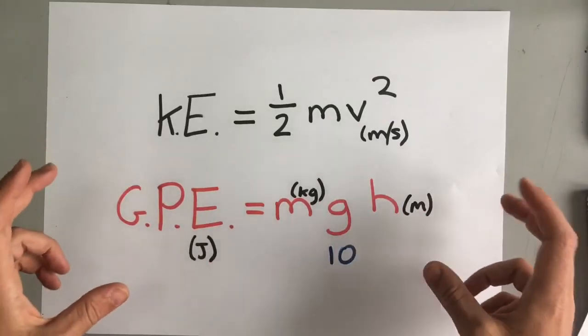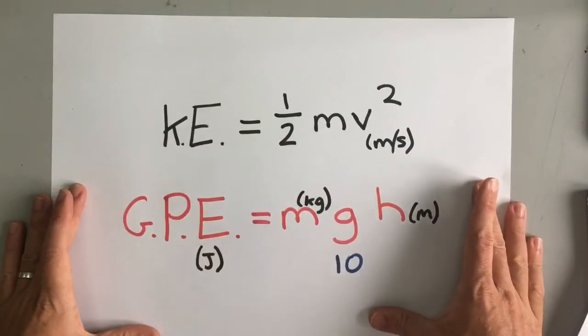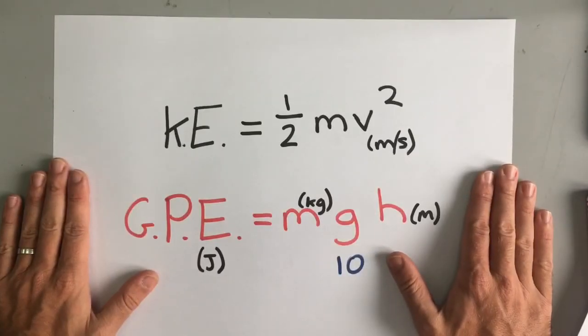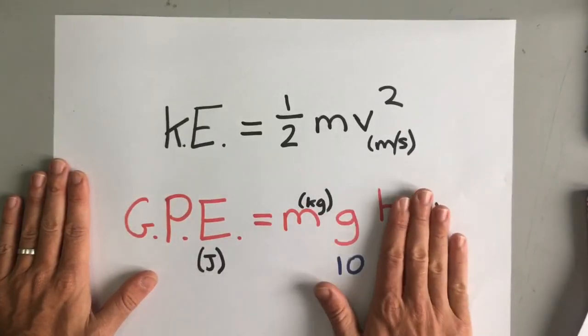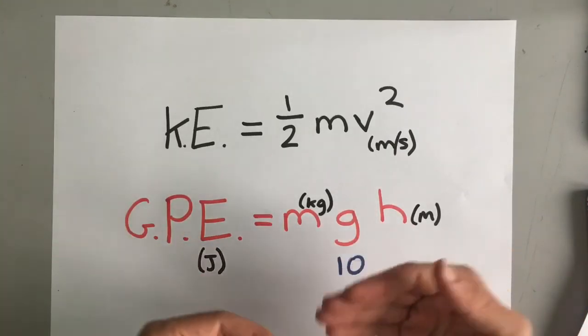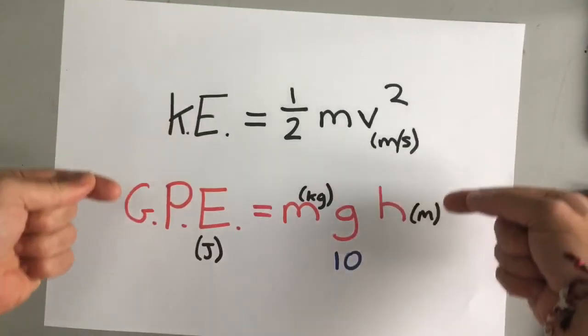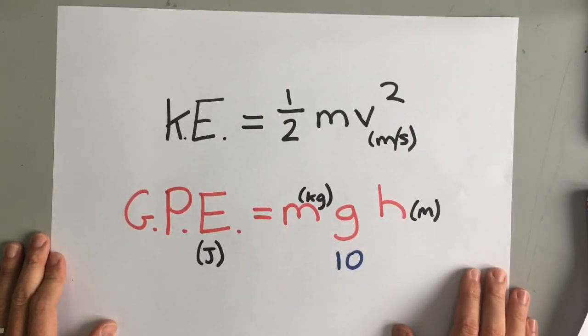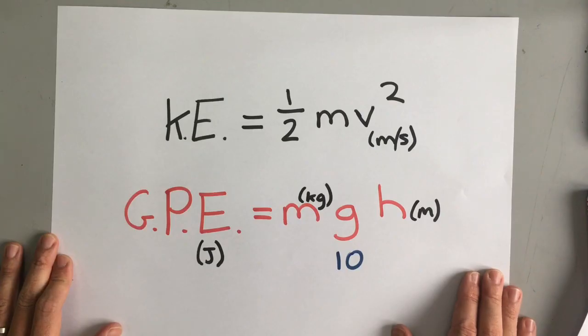Now, the best thing to do with this energy stuff is to just practice lots and lots of exam questions, because exam questions are almost always very much the same pattern, and you just need to get used to doing them. So, memorize these two equations, go to loveatphysics.com, and find some exam questions on kinetic and gravitational potential energy, and you will be absolutely fine in the exam.